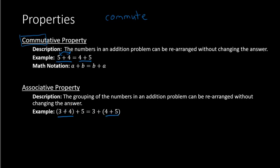If we try to add this — on the left side, 3 plus 4 in the parentheses, if we do that first, we get 7. So we have 7 plus 5, which equals 12. On the right side of this equation, if we add the 4 and the 5 together first, we have 3 plus 9, and 3 plus 9 is still equal to 12. So we have verified that it does not matter how we group together the numbers in an addition problem. That is the associative property illustrated.